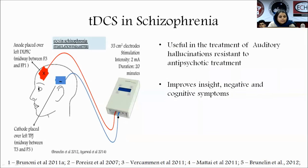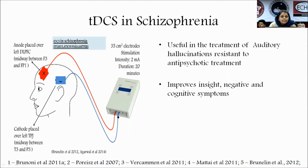In tDCS for schizophrenia, auditory hallucinations are the main symptom. The inhibitory cathode should go to the temporoparietal junction — midway between T3 and P3 of the 10-20 EEG system — and the anode is placed over the left dorsolateral prefrontal cortex. A 35 cm² electrode is used, stimulation intensity is 2 mA, duration 20 minutes, twice daily for five days. It is useful in auditory hallucinations resistant to antipsychotic treatment.